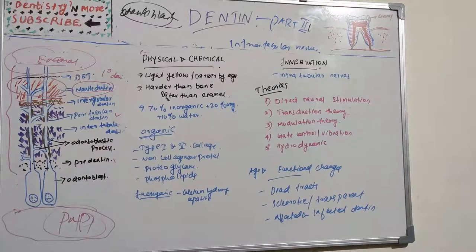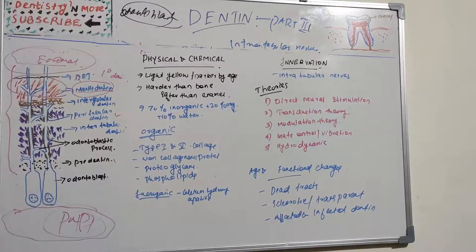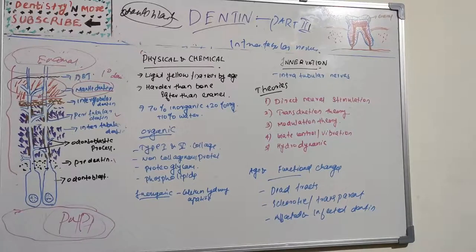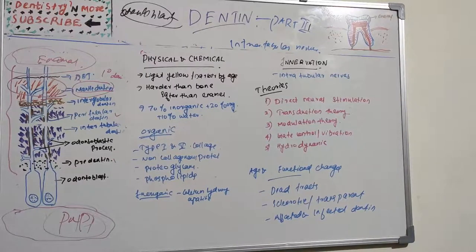The modulation theory states that impulses in the pulp are modulated through the liberation of polypeptides from the odontoblast when injury occurs. These substances may selectively alter the permeability of the odontoblastic cell membrane through hyperpolarization, making pulp neurons more prone to discharge upon receipt of subsequent stimuli. This theory is also not well accepted.